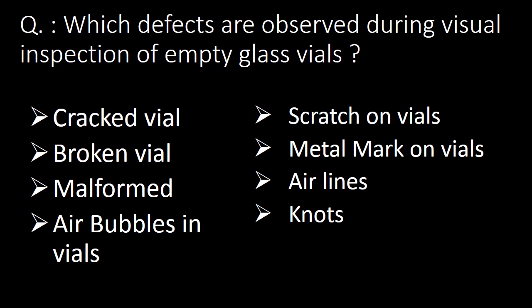Last question, which we can't ignore: which defects are observed during visual inspection of empty glass vials? The answer is cracked vials, broken vials, malformed vials, air bubbles in vials, scratches on vials, metal marks on vials, airlines, and knots.